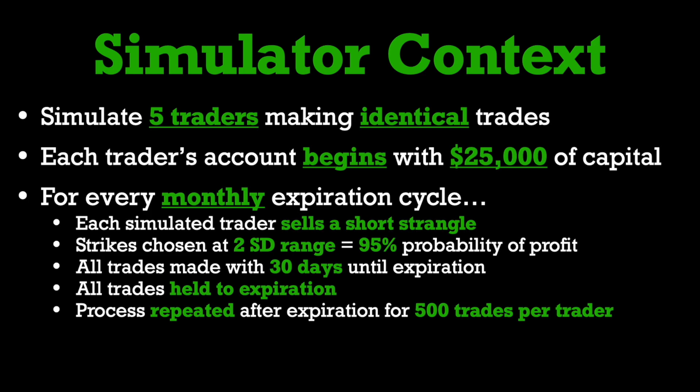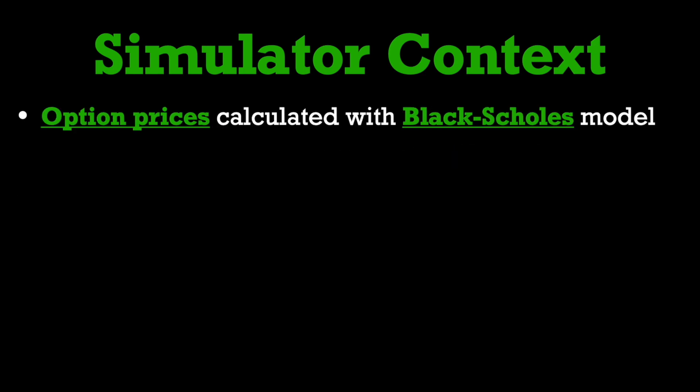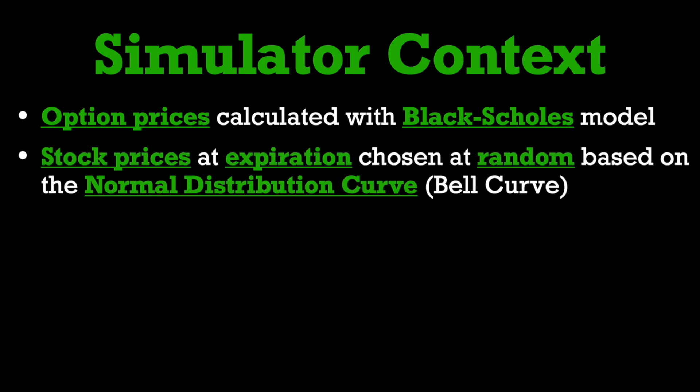500 monthly expiration cycles equates to about 40-plus years of trading. So essentially with this simulation, we're going to look at someone's entire trading career to see if in the long term having a super high win rate does guarantee profitability. All the option prices will be calculated based on the Black-Scholes option pricing model, and the stock price at each expiration will be chosen at random based on the normal distribution curve — the bell curve.